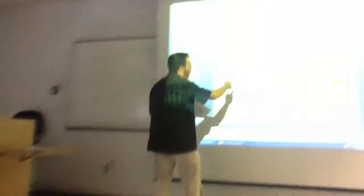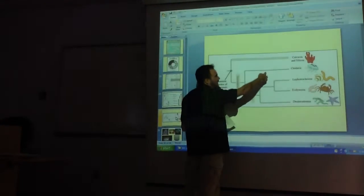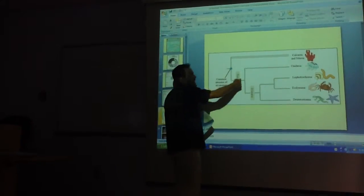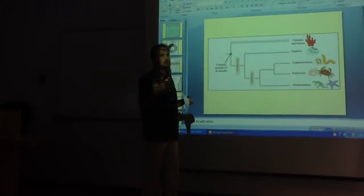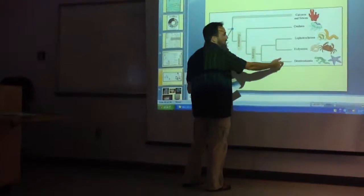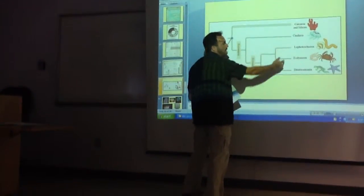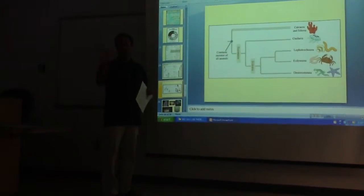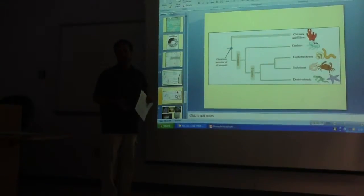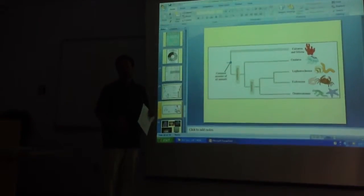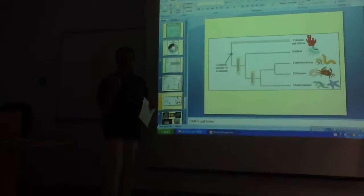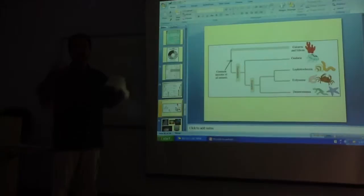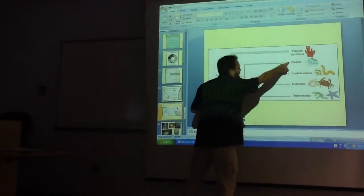If R is not ancestral, then R had to evolve independently in cnidarians and deuterostomes — that's convergence. But if you say R is ancestral, there's no convergence at all. The R is just retained as the ancestral condition in those two, and S and I are each derived for Lophotrochozoans and Ecdysozoans. If R is not ancestral and S or I is ancestral, you have to have convergence because R appears in two completely unrelated lineages.